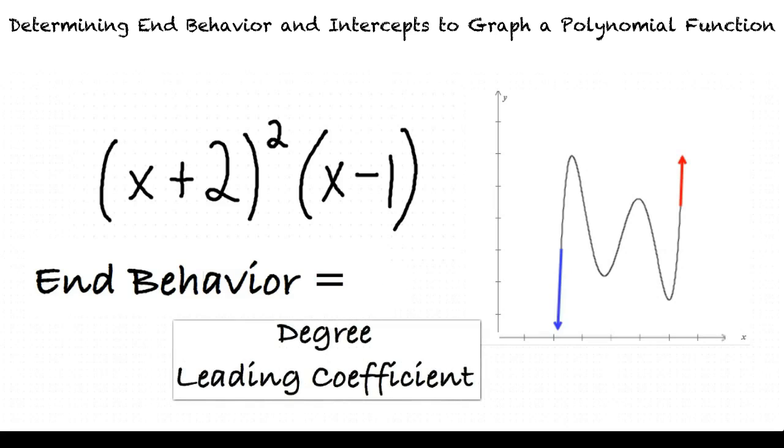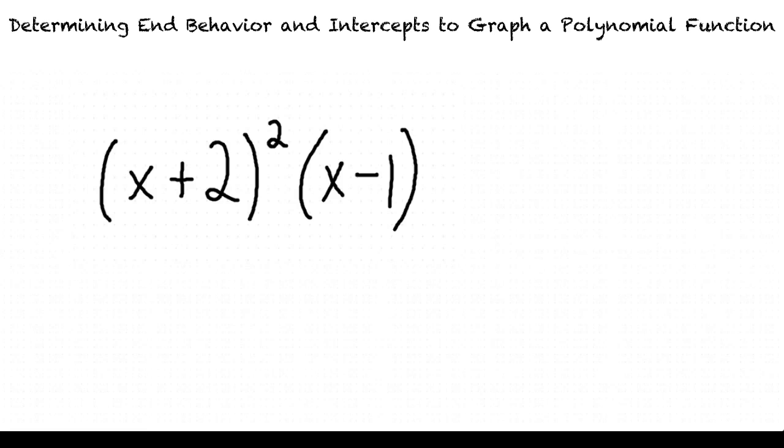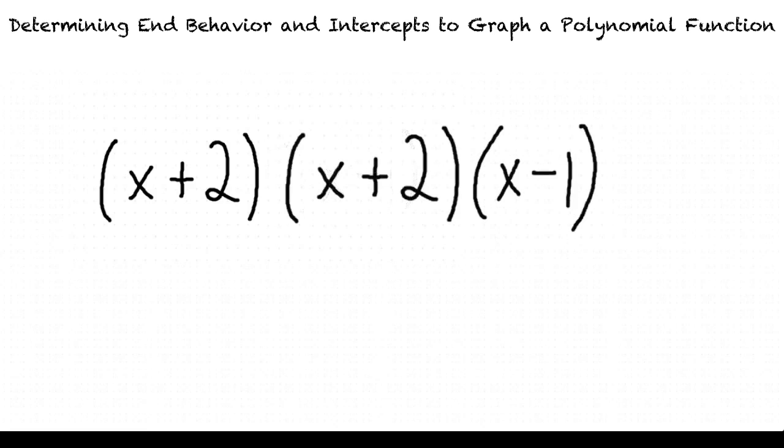In the above example, the degree of the polynomial can be computed by multiplying the highest degree term from each binomial. (x+2)² can be rewritten as (x+2)(x+2), right? That's right.